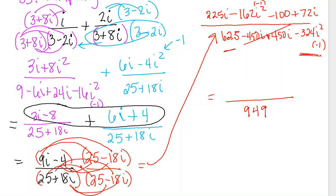The numerator—I see here that I'm going to have—this is going to end up being a positive 162 minus 100, so that's 62. 225i plus 72i is 297i.